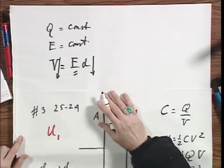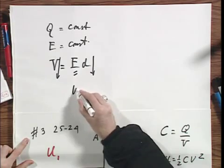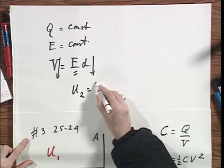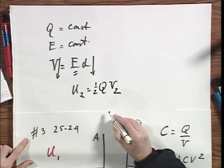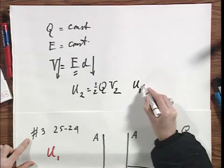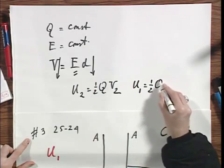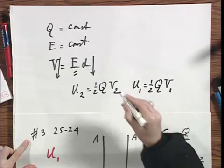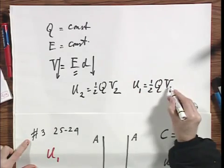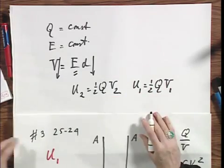And you can easily calculate how much that is. And so U2, which is one-half Q V2, is clearly lower than U1, which is one-half Q V1. Because V2 is smaller than V1, and the Qs are the same.